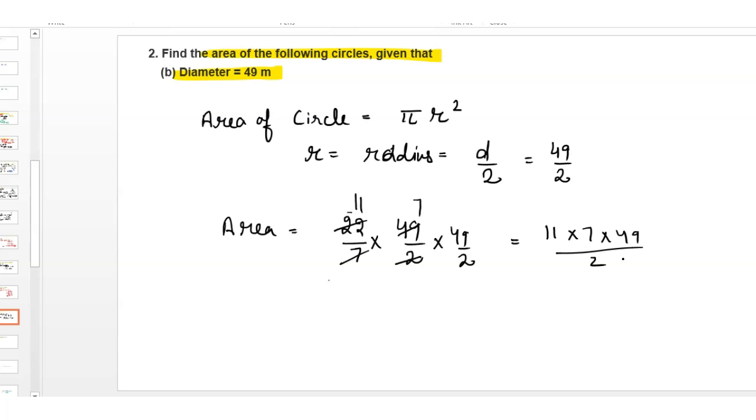11 times 7 times 49, divided by 2, gives us 1886.5 square meters. This is the area for this question.